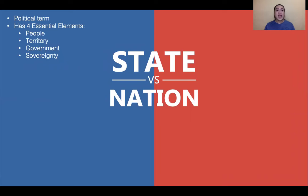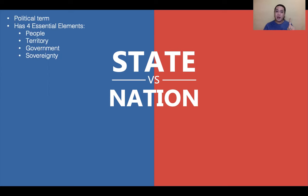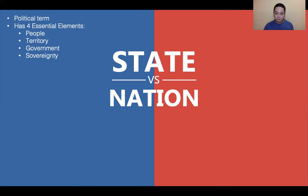When talking about state, it has four essential elements — if even one is not present, a state cannot exist. The four essential elements are: people, territory, government, and sovereignty. What does it mean by people? These are the inhabitants living within the state. Like us — we are the people, the inhabitants of this state.